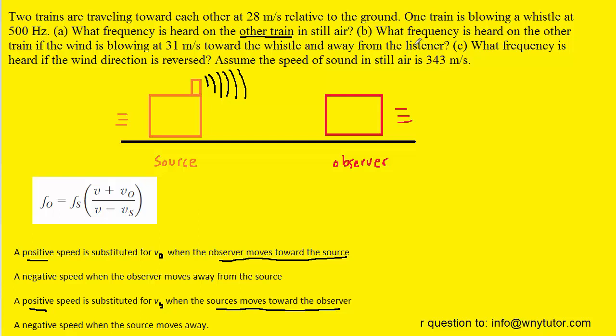Now in part B we're again being asked to calculate the frequency heard on the observer train. But this time there is a wind blowing 31 meters per second towards the whistle. So we could maybe draw a couple of arrows to indicate the direction of the wind. Notice that the wind is flowing towards the whistle or towards the source of the sound.